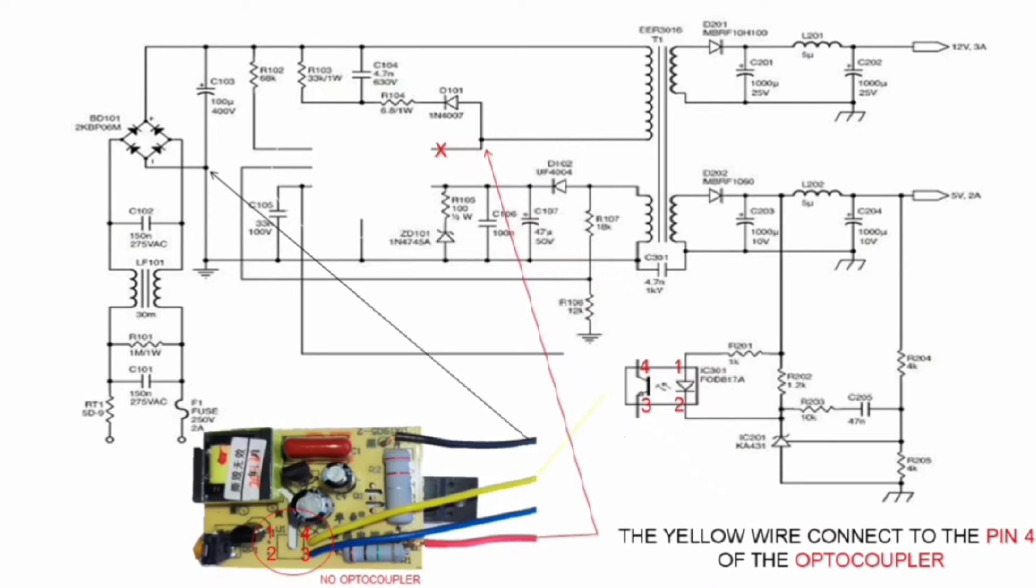The yellow wire connect to the pin 4 of the optocoupler IC. The blue wire connect to the pin 3 of the optocoupler IC.